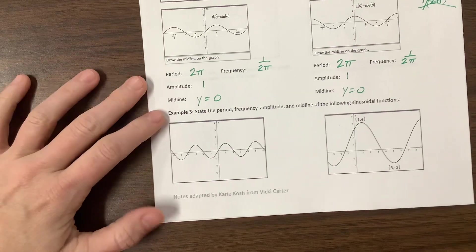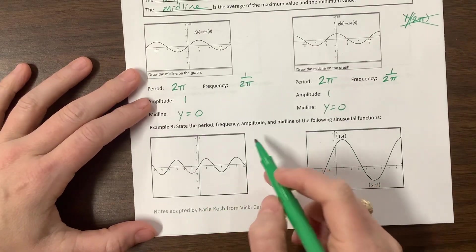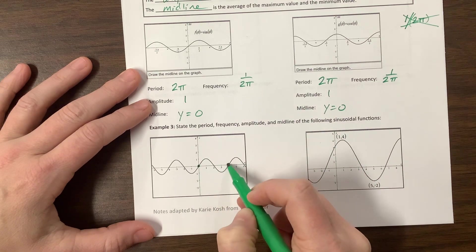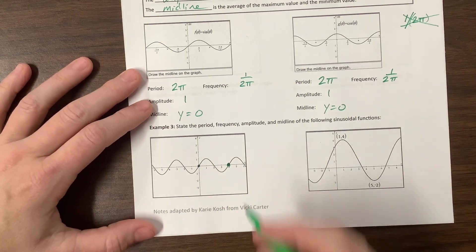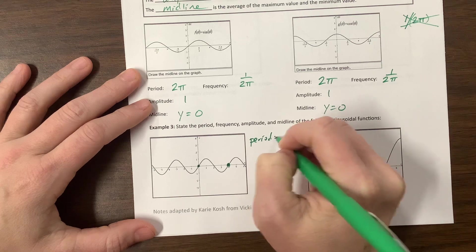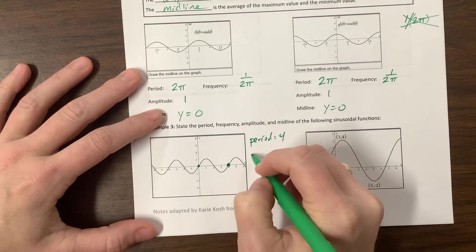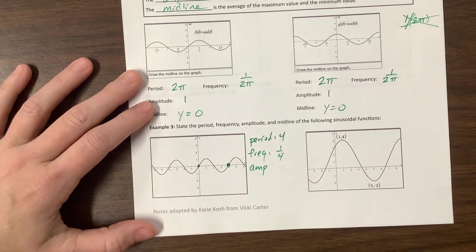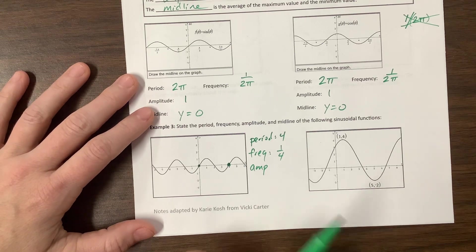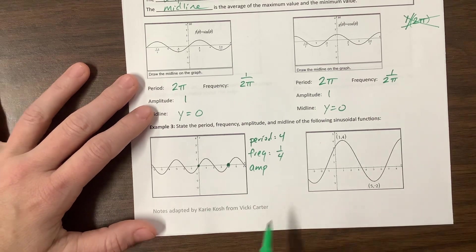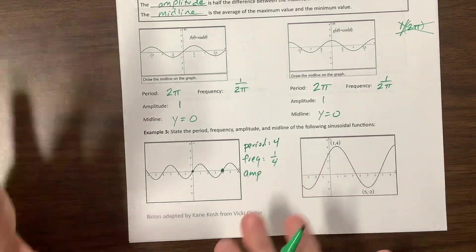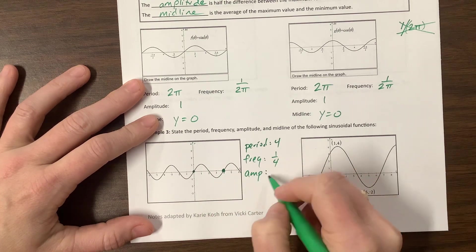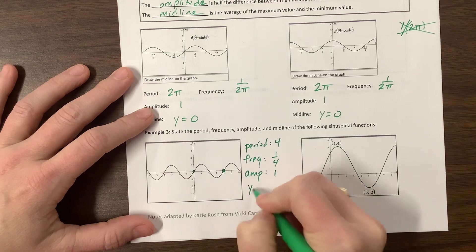State the period, frequency, amplitude, and midline of the following sinusoidal functions. The period is how long it takes to do everything it's going to do. It starts here, goes up, comes down, and ends up getting back to where it began at four, so its period is four. The frequency would therefore be one-fourth. Usually when I see these problems, I would always ask domain, range, period, amplitude, and asymptotes. Frequency is kind of a new thing to throw in here with midline, but we can handle it. The amplitude is how high up we went and how far down we went, so it went up one and down one. The midline is still just y equals zero.